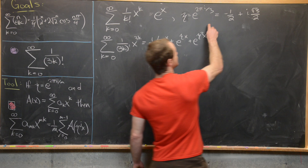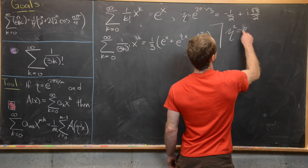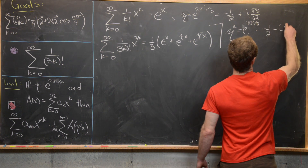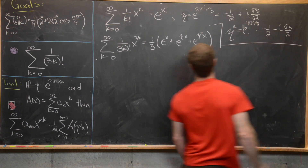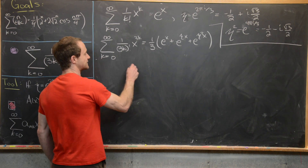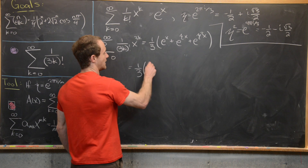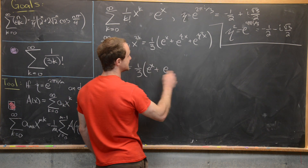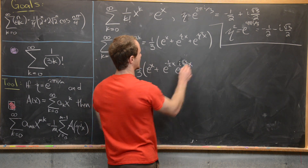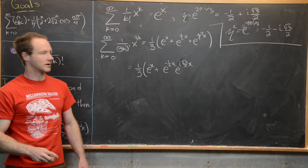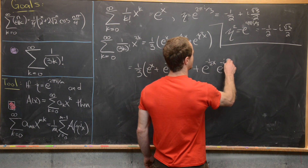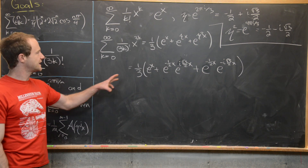Similarly, η² = e^(4πi/3) = -1/2 - i√3/2. Plugging these into our tool gives: the sum k from 0 to infinity of x^(3k)/(3k)! equals 1/3 times [e^x + e^(-x/2) · e^(i√3x/2) + e^(-x/2) · e^(-i√3x/2)], splitting real and imaginary parts of the exponents.